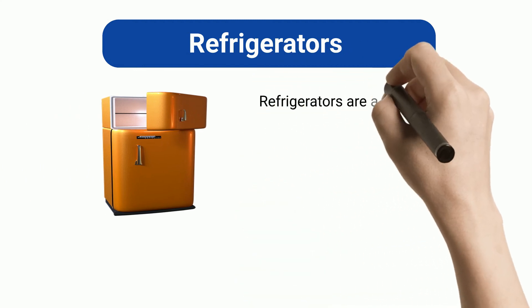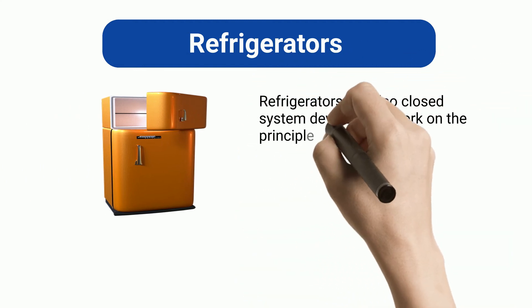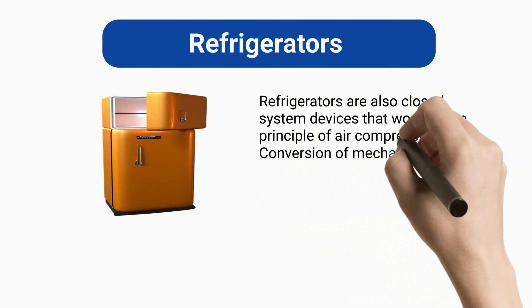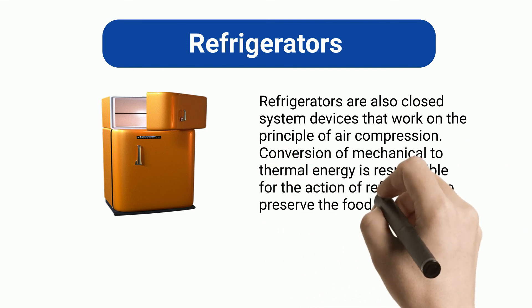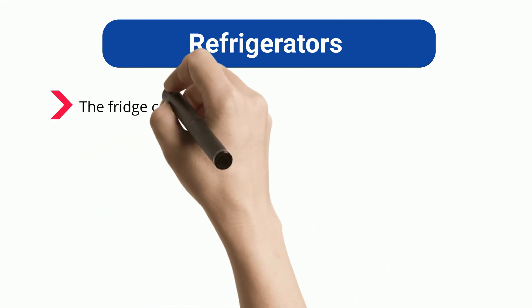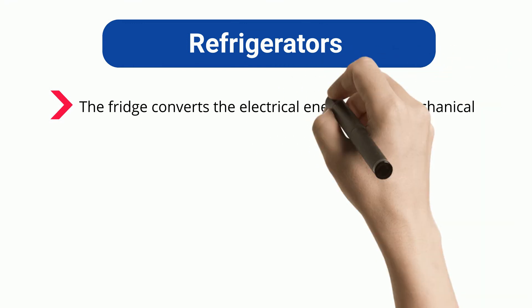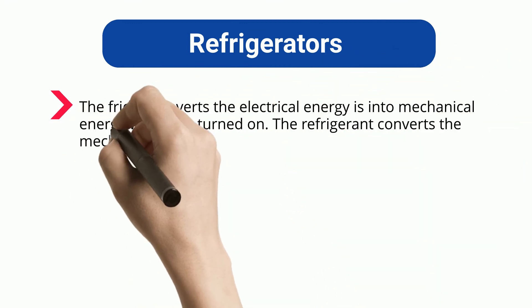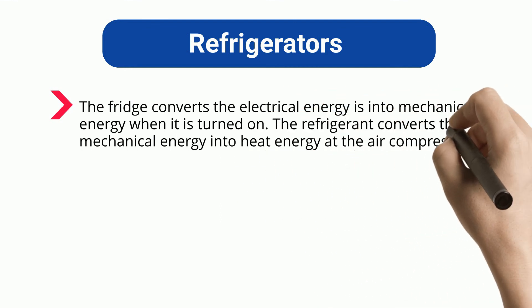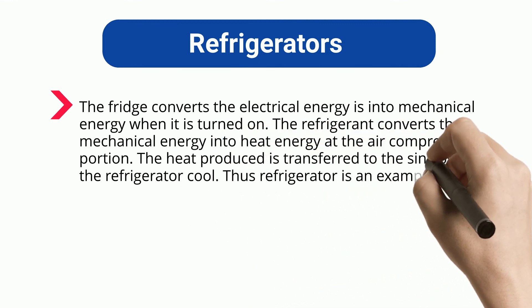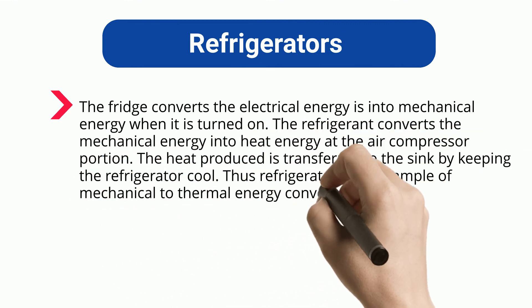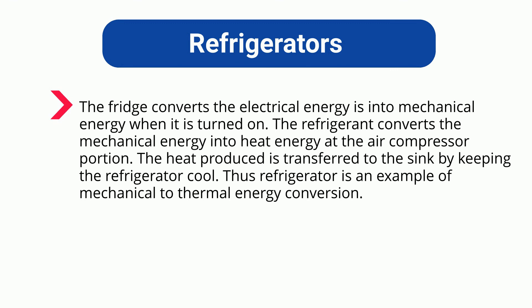Refrigerators. Refrigerators are also closed system devices that work on the principle of air compression. Conversion of mechanical to thermal energy is responsible for the action of the refrigerator to preserve food. The fridge converts electrical energy into mechanical energy when it is turned on. The refrigerant then converts the mechanical energy into heat energy at the air compressor portion, and the heat produced is transferred to the sink, keeping the refrigerator cool. Thus the refrigerator is an example of mechanical to thermal energy conversion.